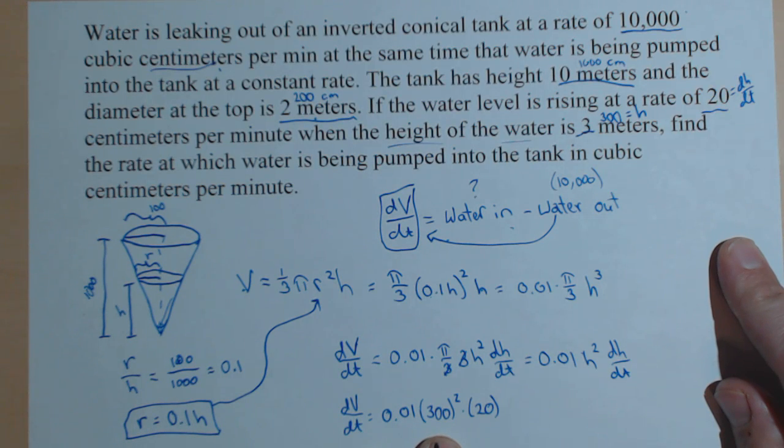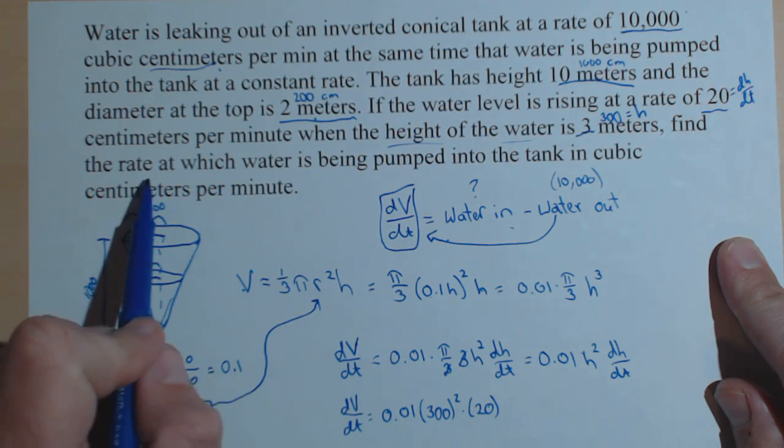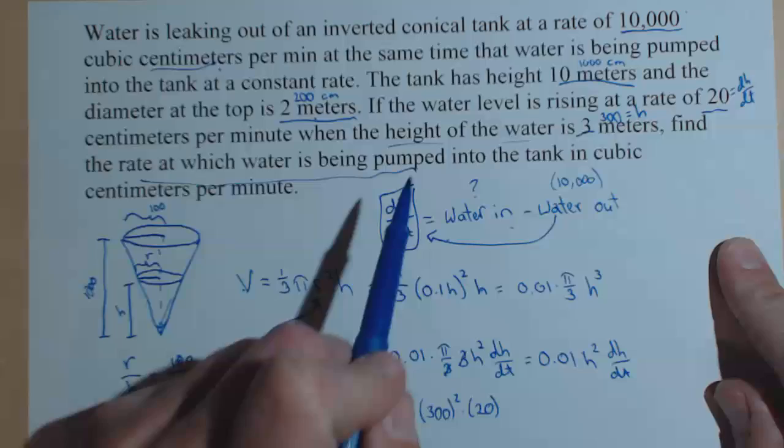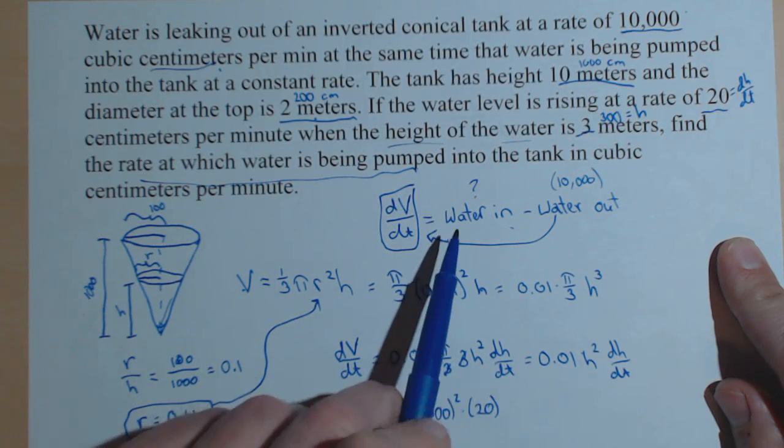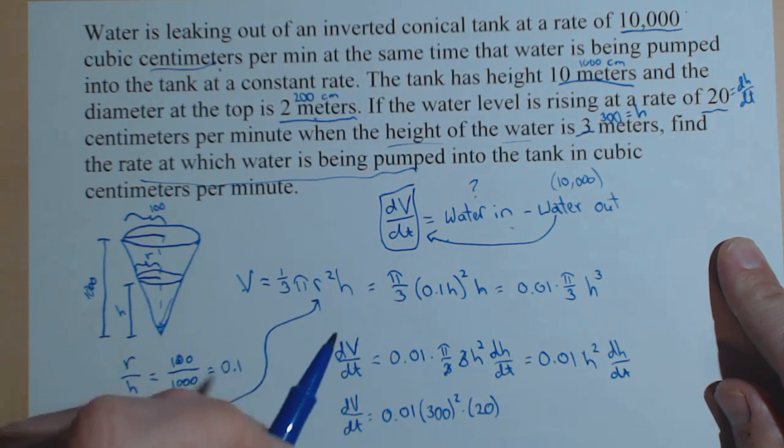Now, to finish answering this question, remember, it wanted to know the rate water was being pumped in. This is just the change in volume. Well, the water in minus the water out gives us the change in volume. So, now we're going to take our answer for dV/dt.